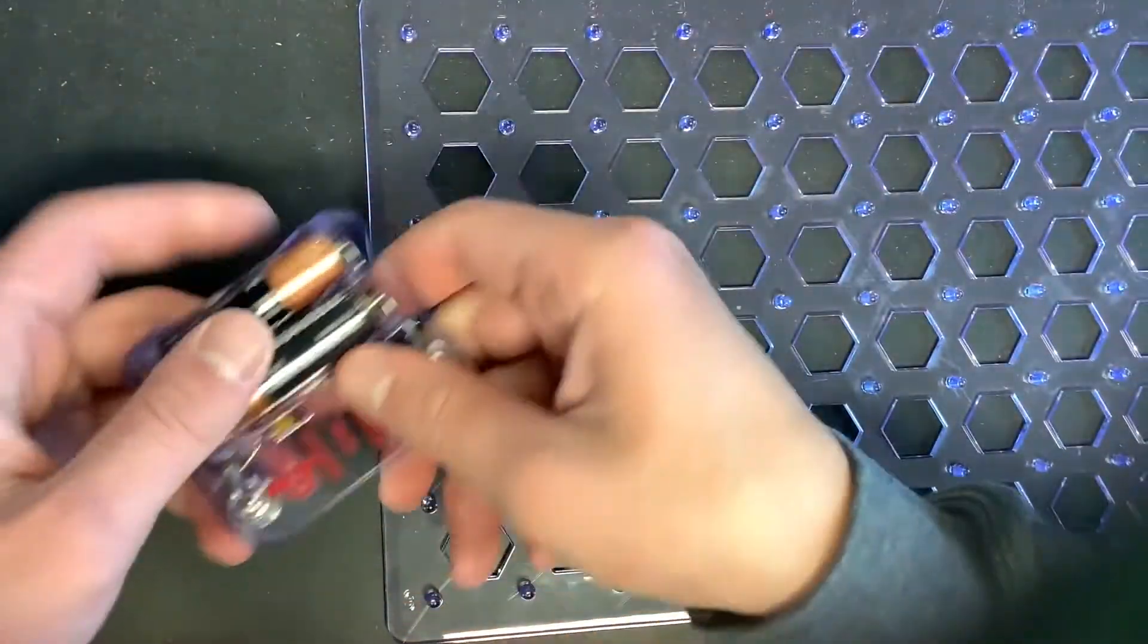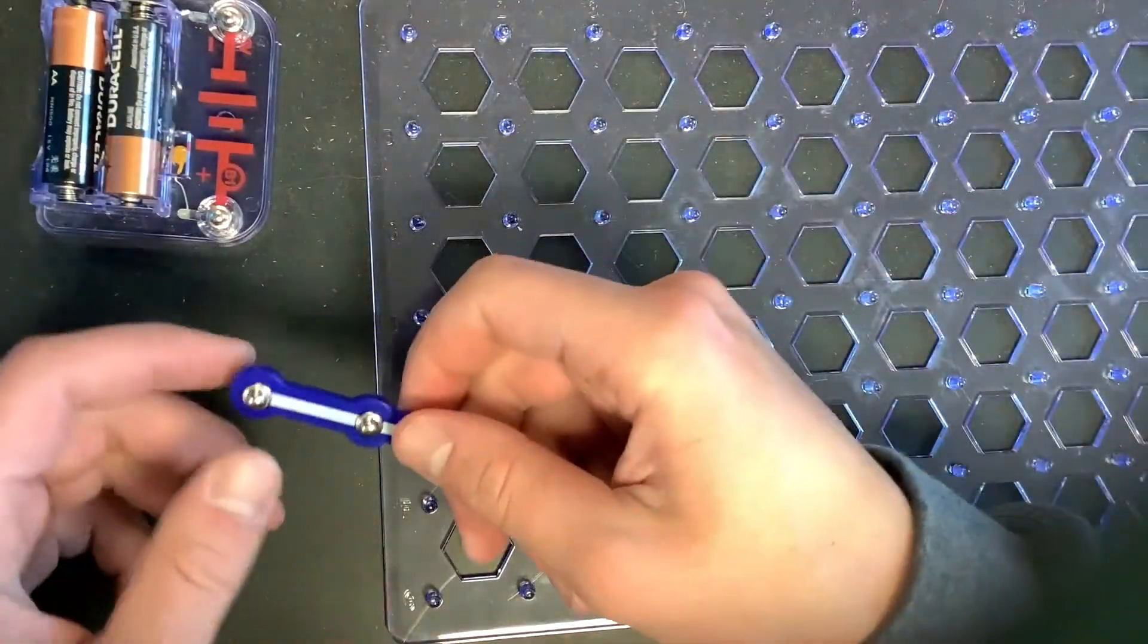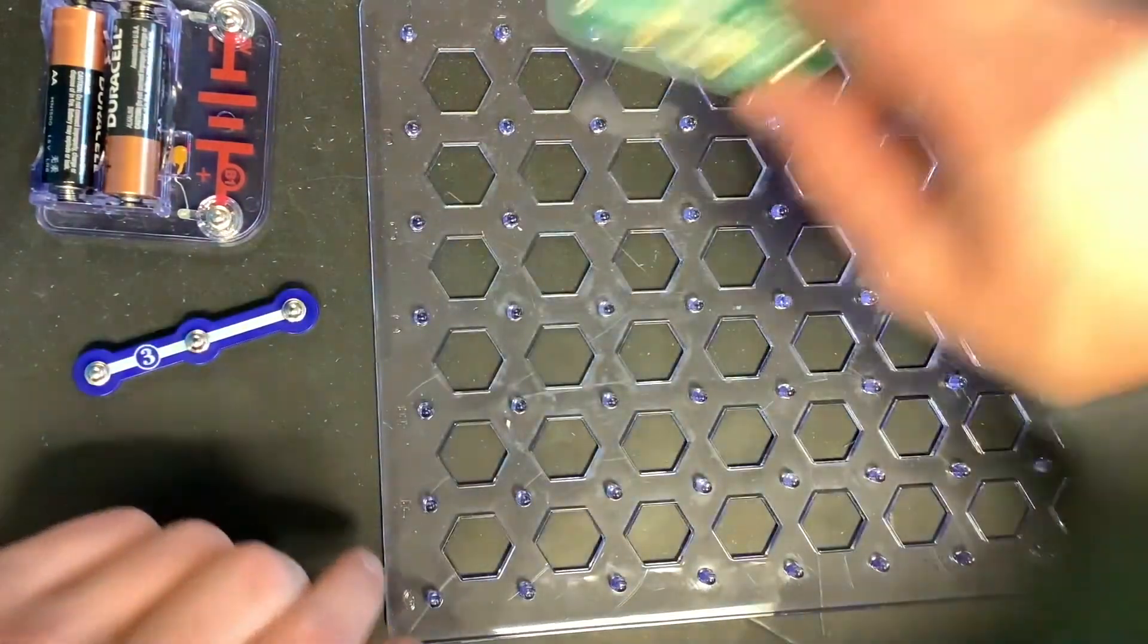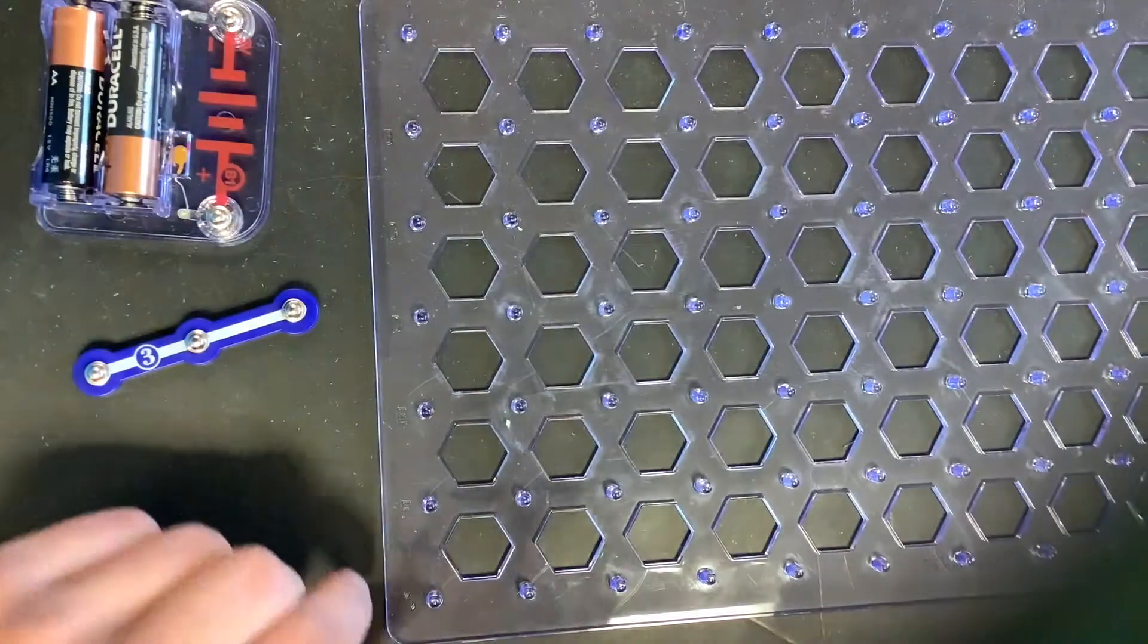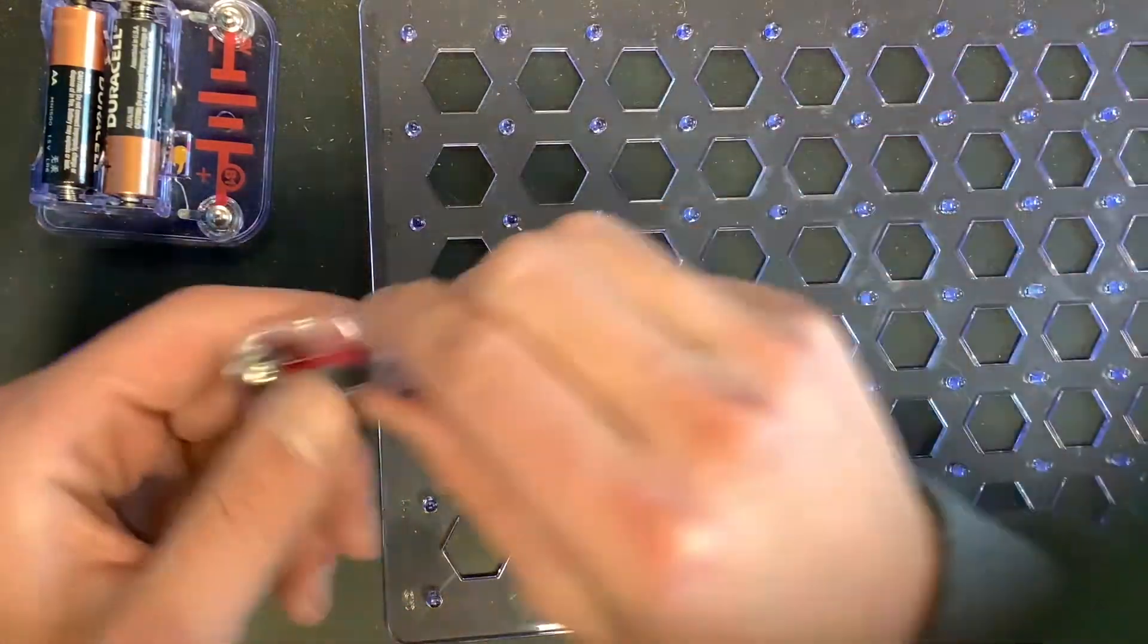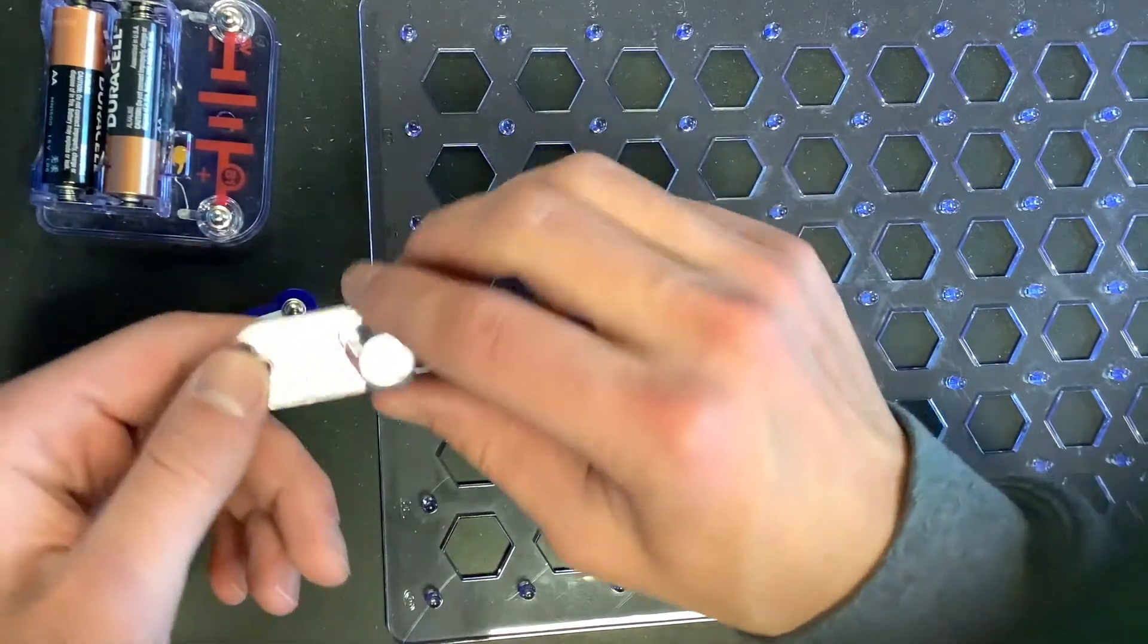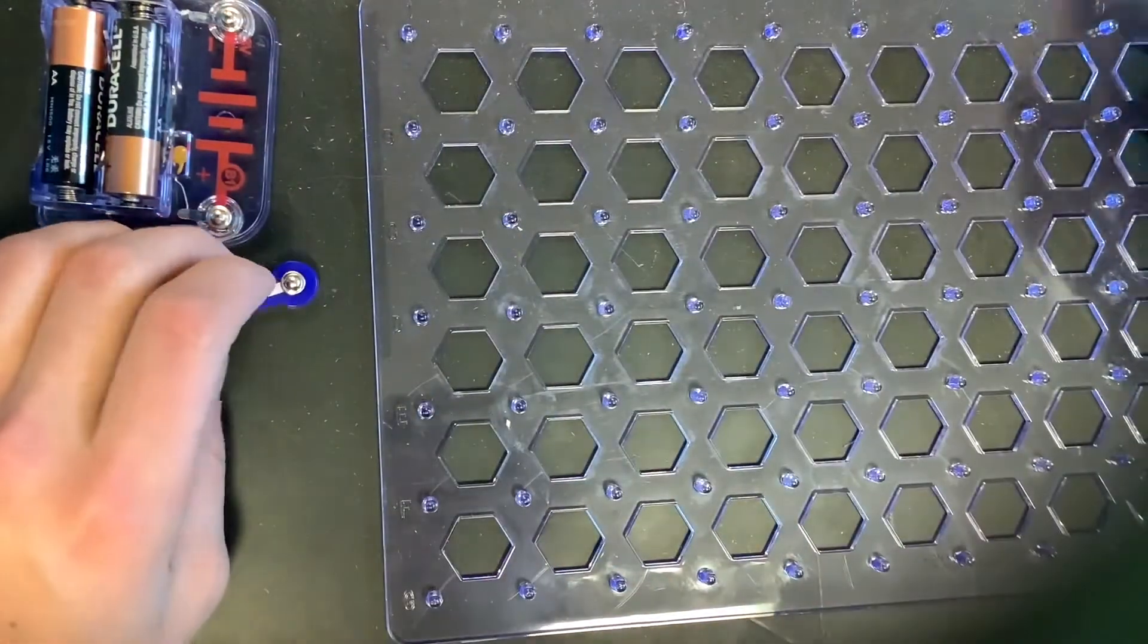So for this circuit, we're going to need our little battery pack, a three connector, a switch, and then we also need our three-volt lamp. And you can see it says three volts right there. And we'll get into why that's important later.